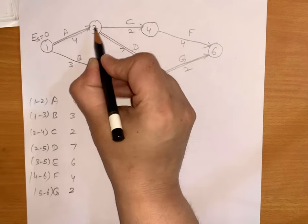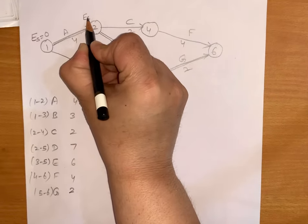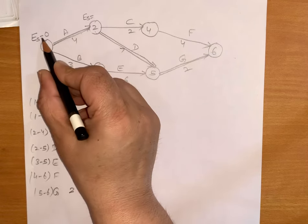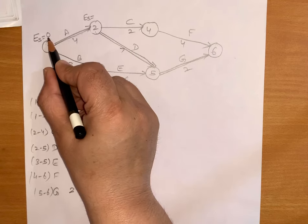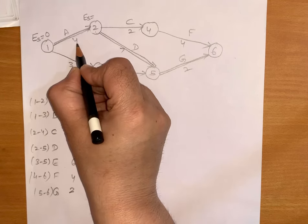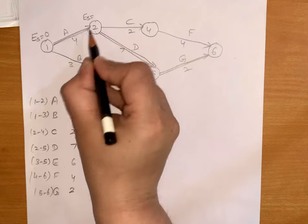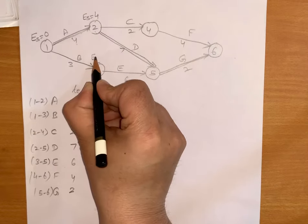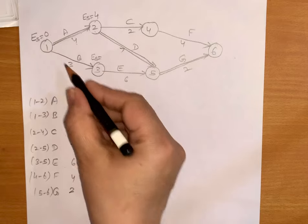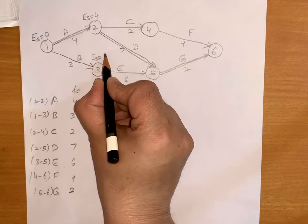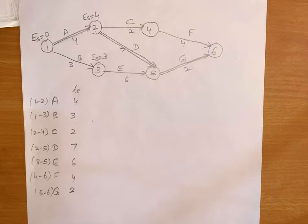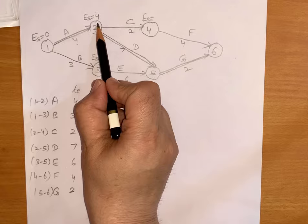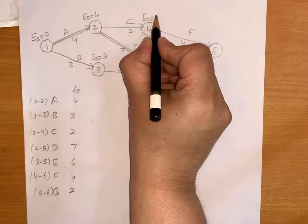For event number 2, earliest start will be the earliest start of the first event, that is 0, plus the expected time for that activity — 0 plus 4 equals 4. Now for the third event, earliest start will be 0 plus 3, which is 3. Similarly for event 4, earliest start will be 4 plus 2, which is 6.